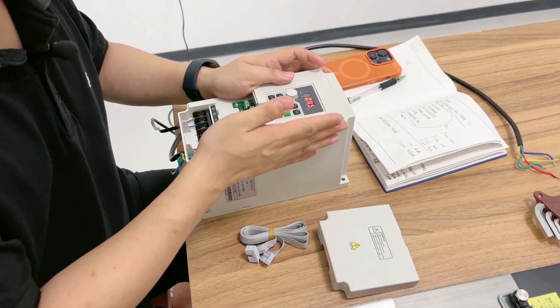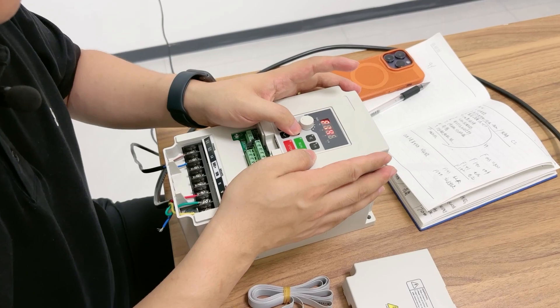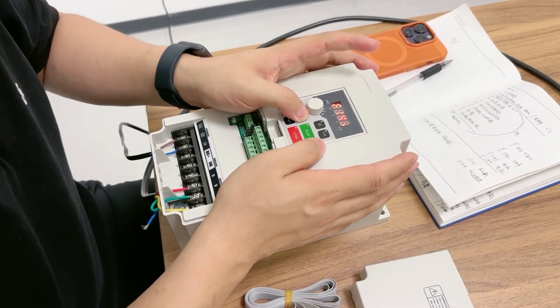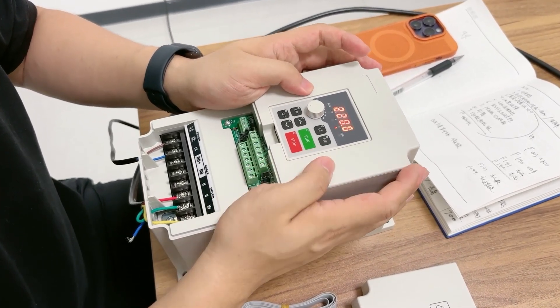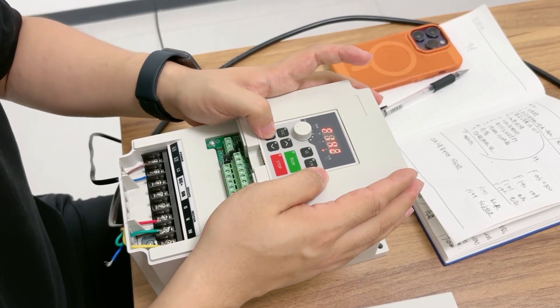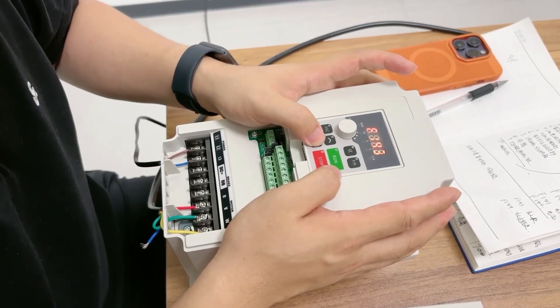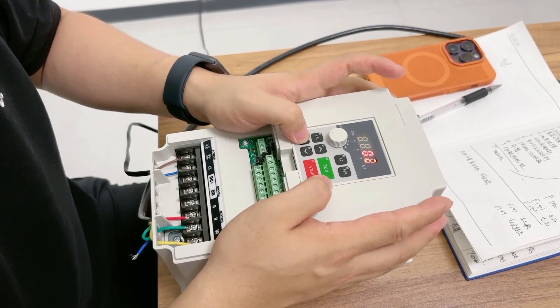And F141, here is input voltage. And then F142, this is current - 16A. And then F143, this is poles.